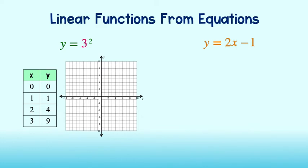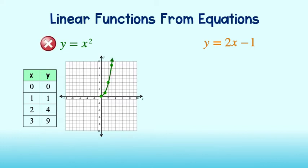Each pair of values in the table becomes an ordered pair for the graph. So we plot the points (0, 0), (1, 1), (2, 4), and (3, 9). Drawing a line through these points, we see that it is not a straight line and therefore the equation does not represent a linear function.